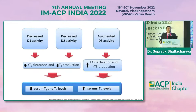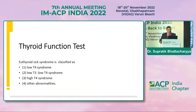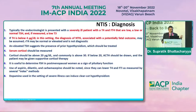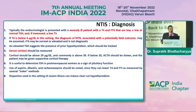Decreased D1 and D2 activity leads to reduced reverse T3 clearance and reduced T3 production. Augmented D3 activity leads to increased T3 inactivation and reverse T3 production, resulting in reduced T3 and T4 levels and increased reverse T3 levels. In this scenario, thyroid function tests will show low T4, low T3 syndromes, or other abnormalities. In severe illness with low T4 and free T4, or low-normal TSH, if measured T3 is also low, we need to look at the serum cortisol level.